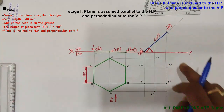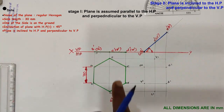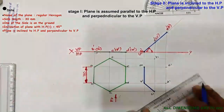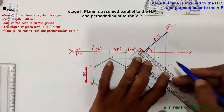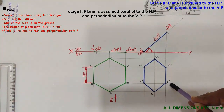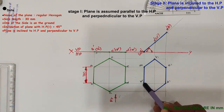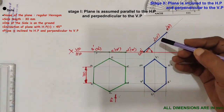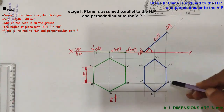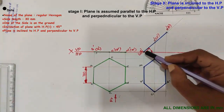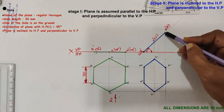Join these points with straight line segments based on the sequence of joining used in the original top view. This is the top view of the hexagonal plane when it rests on side AB on HP, inclined at 45 degrees to the HP and perpendicular to the VP. Because the plane is inclined to the HP, the horizontal plane shows a reduced image of the hexagon. Because the plane is perpendicular to the VP, the vertical plane shows the image as a straight line.